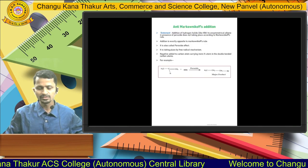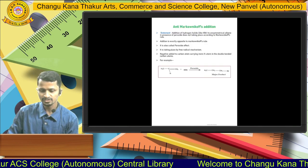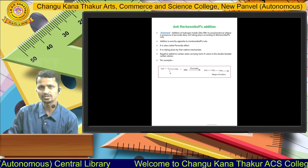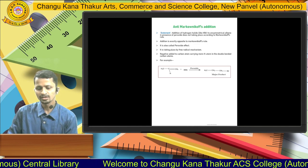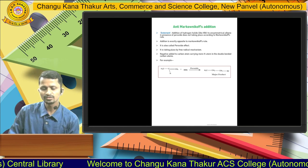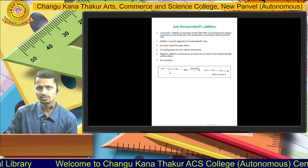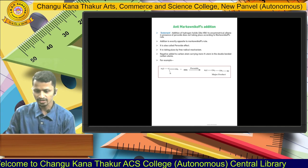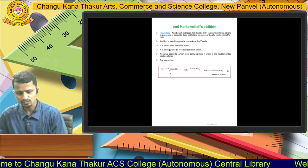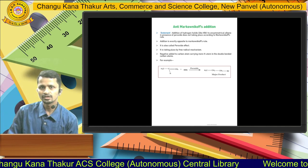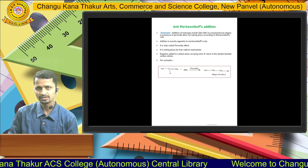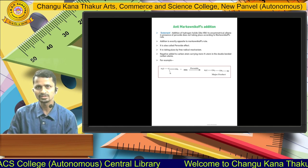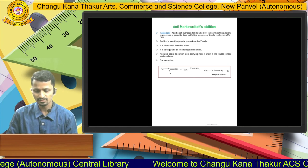Here we learn the Anti-Markovnikov Addition Rule. We learned in the previous lecture what the Markovnikov Rule is. The Anti-Markovnikov Rule is generally observed in the presence of peroxide — that is, the addition of hydrogen halides to an unsymmetrical alkene in the presence of peroxide does not take place according to the Markovnikov Rule; it takes place according to the Anti-Markovnikov Rule.